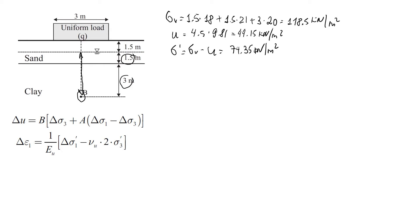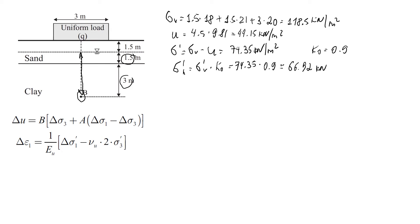We can find the horizontal effective stress using the coefficient of earth pressure at rest. Assuming K₀ = 0.9, the effective horizontal stress equals 74.35 × 0.9, which is approximately 66.92 kN/m². The total horizontal stress equals effective horizontal stress plus pore pressure, giving approximately 111.1 kN/m². These are the stress conditions before any load is applied.